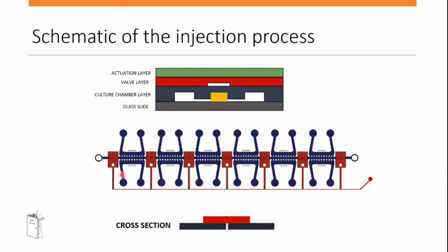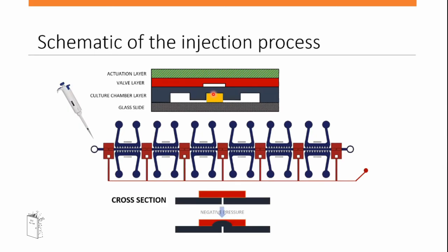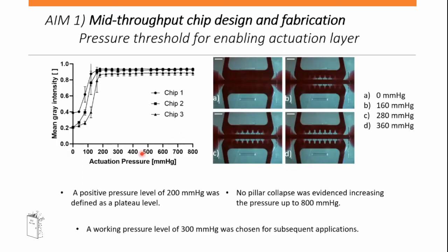Regarding the injection process: in a section view, the gel shown in yellow is injected within the device. By applying negative pressure, the valve layer lifts the walls, making it possible to inject — in just one single injection — the hydrogel loaded with cells into all chambers simultaneously. Achieving complete injection across all chambers is a challenge we're still working on.